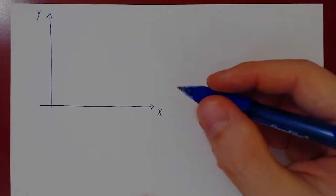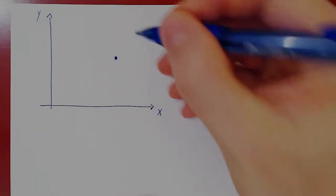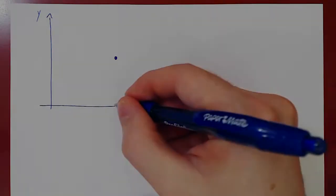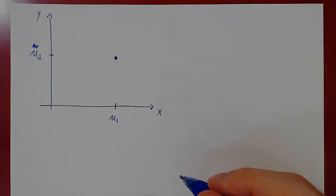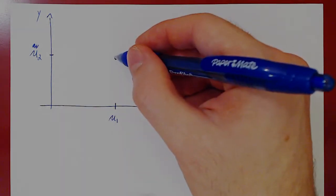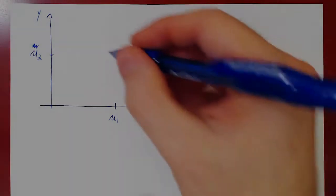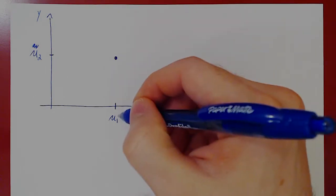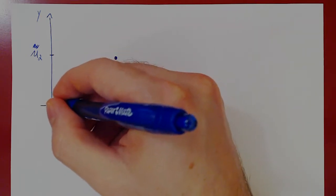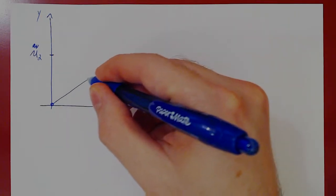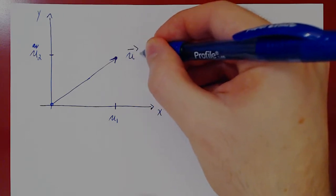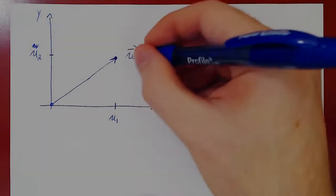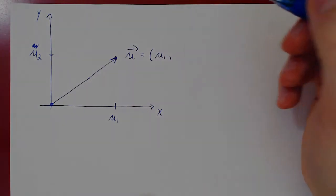Suppose I give you vector u in its algebraic form, where its x-component is u1 and its y-component is u2. As always, if you give me a single point in the plane, I can view the point as a point, or also as a vector whose terminal point is this point but whose initial point is the origin. By connecting these two I can form the vector u, where the x-component is u1 and the y-component is u2.